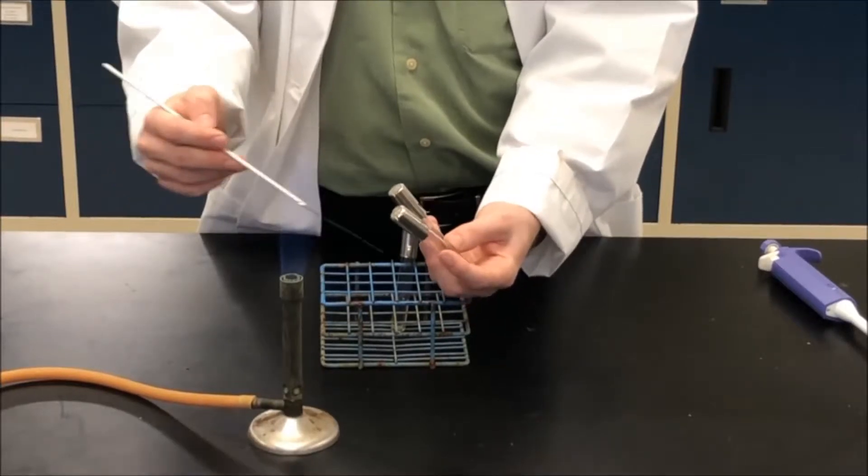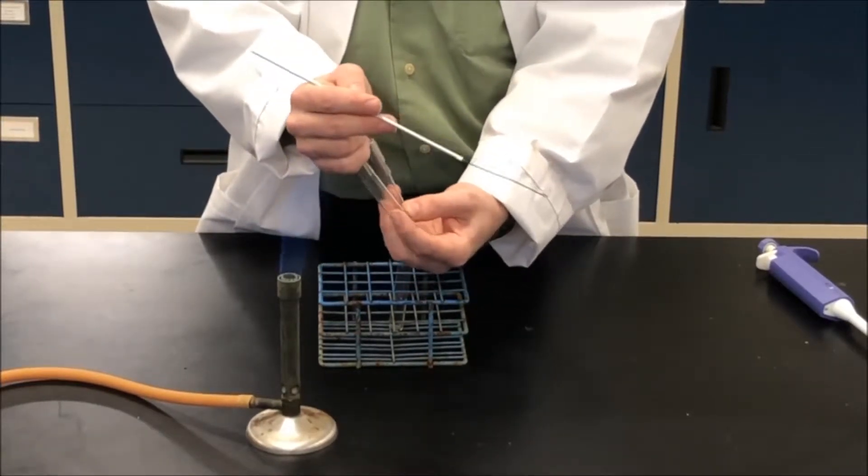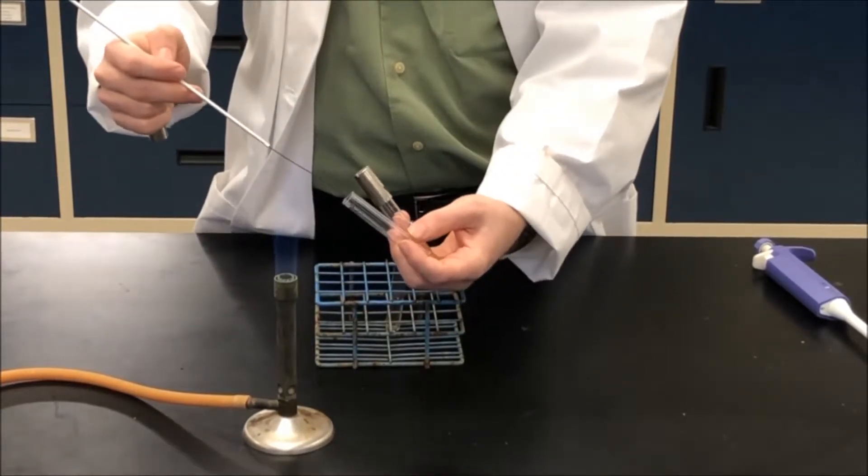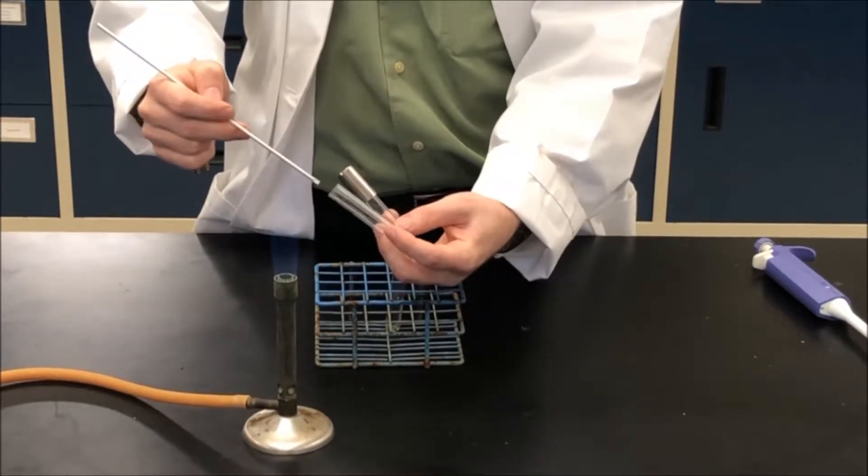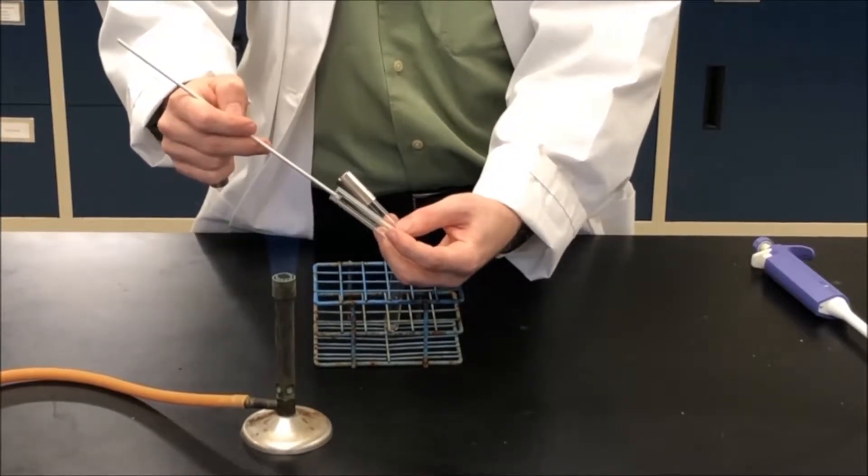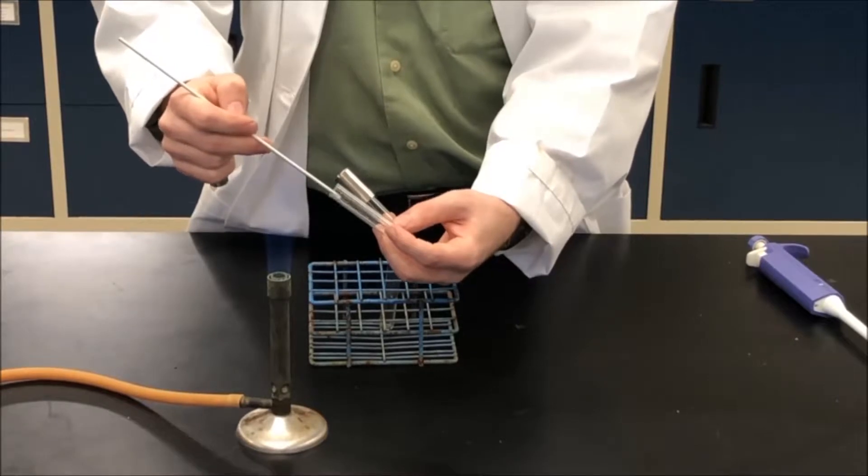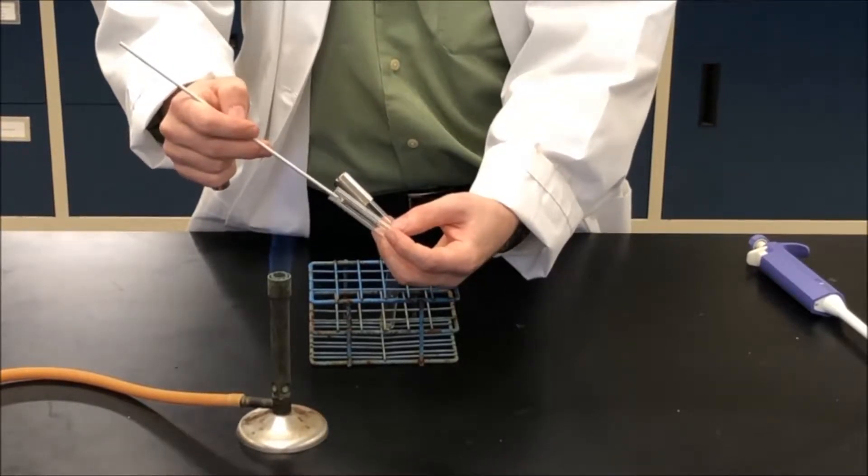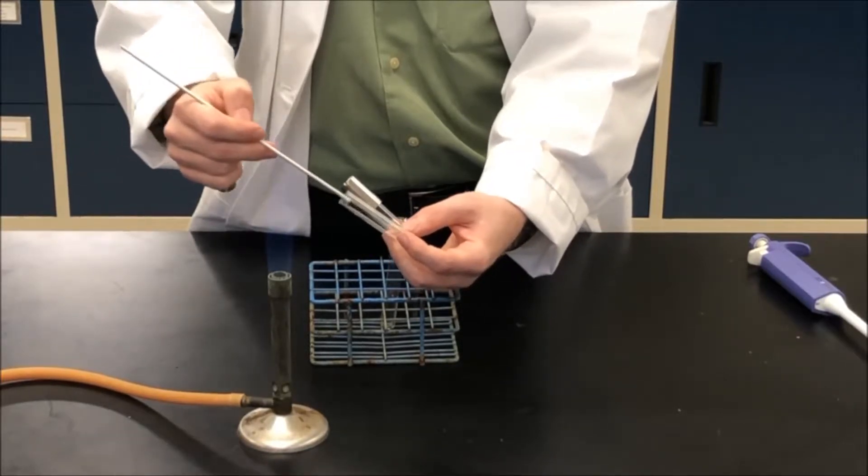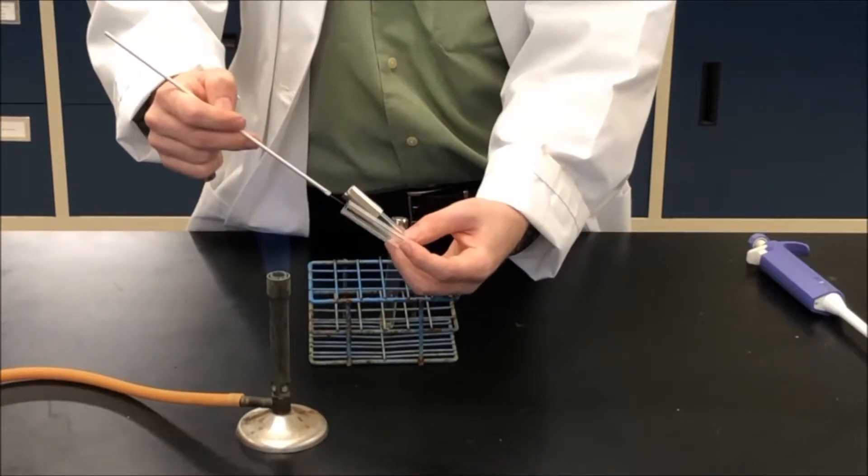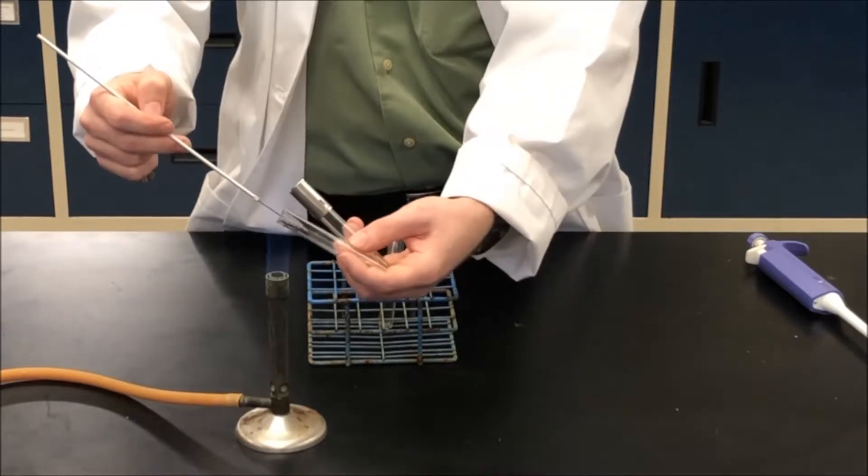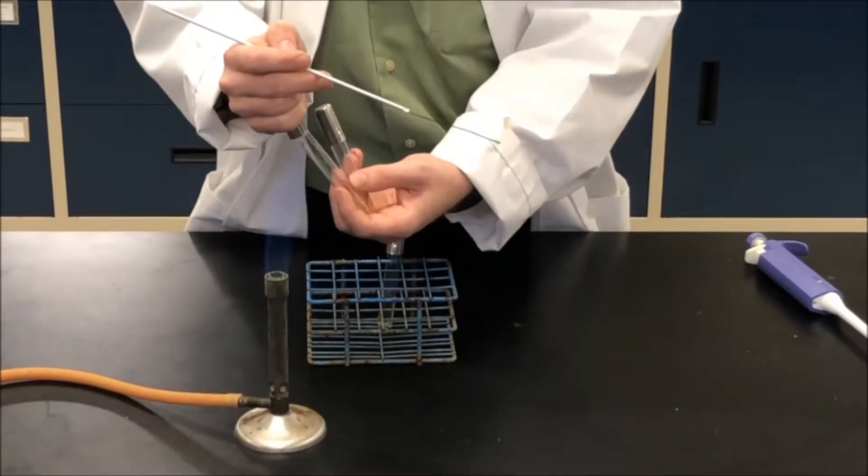Then we start off again. I'm going to open up the culture of bacteria, I'm going to flame the lip, and then I'm going to insert my loop into the broth. If your loop is too hot, you're going to hear some sizzling. That means that you've just killed off some bacteria that's in your culture. That's no problem. All you have to do is just move your inoculating loop up and then go back in.